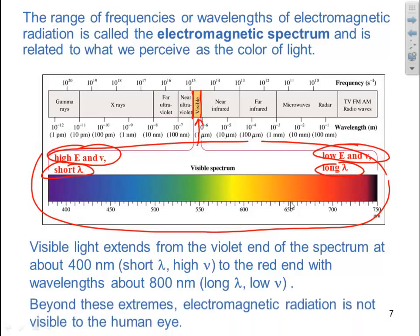Beyond these extremes, electromagnetic radiation is not visible to the human eye. However, we take advantage of those other radiations by using instruments that can detect it. This gives us valuable data in analyzing substances.